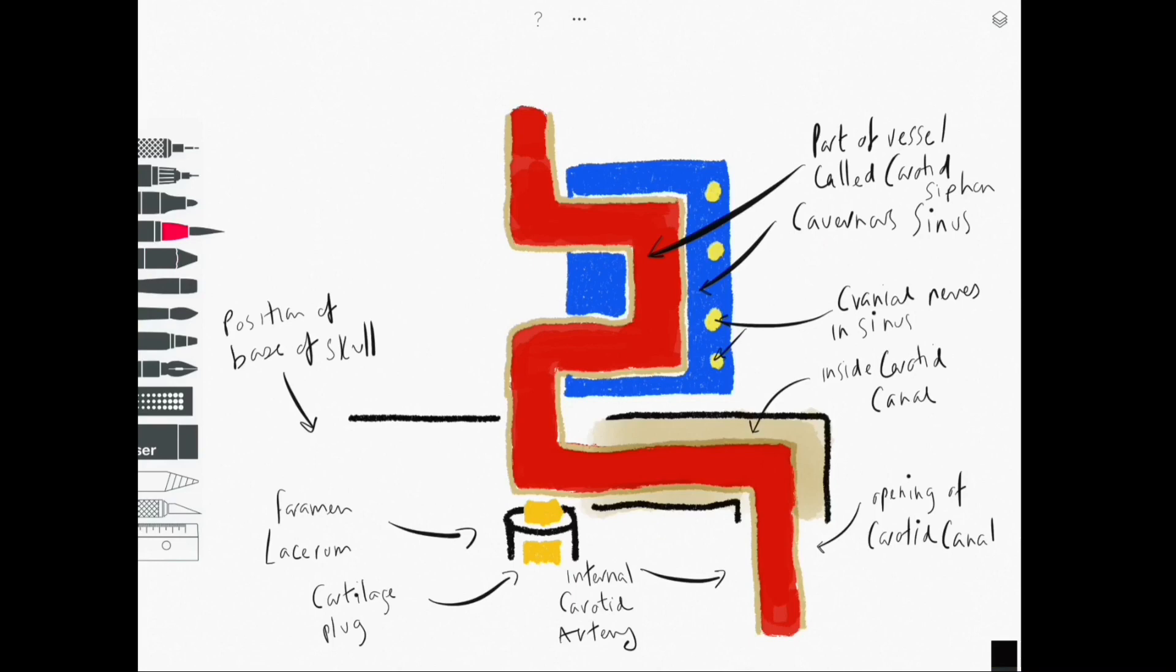The internal carotid artery will continue to ascend. It will leave to enter the dura at the anterior clinoid process of the sphenoid bone and there it will travel and continue to contribute to its terminal branches which are the anterior cerebral artery and the middle cerebral artery.